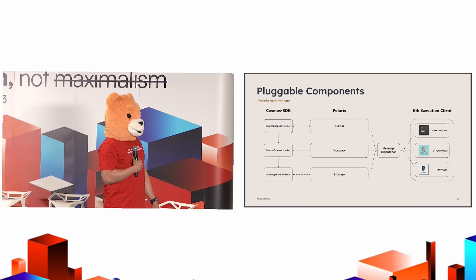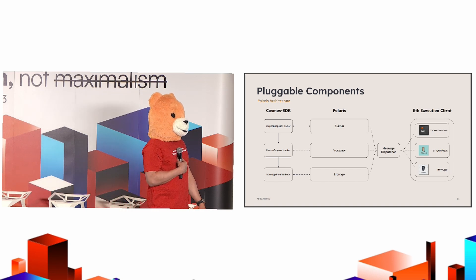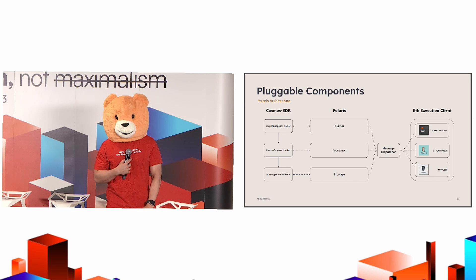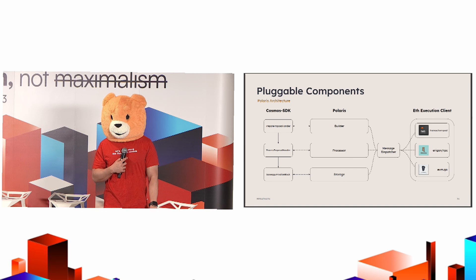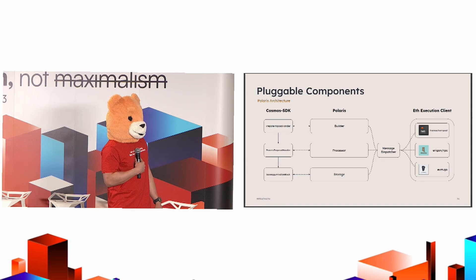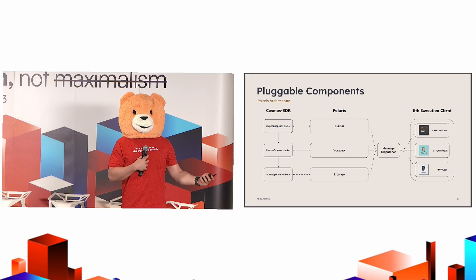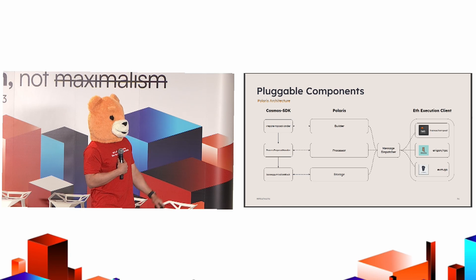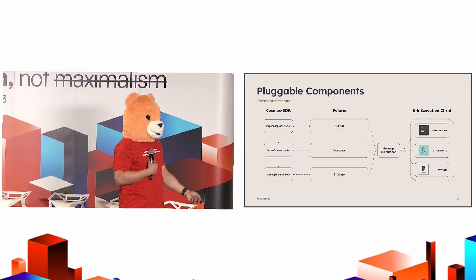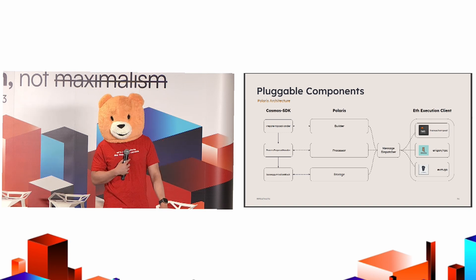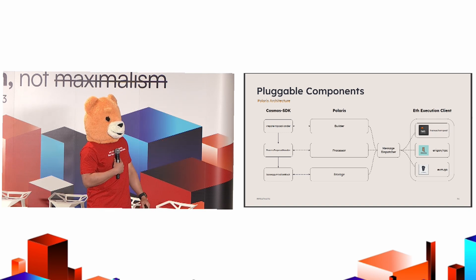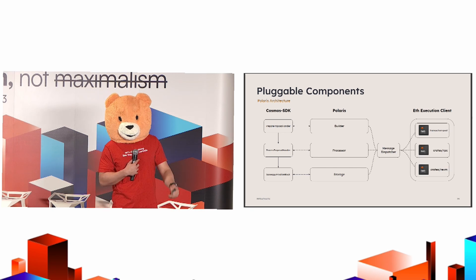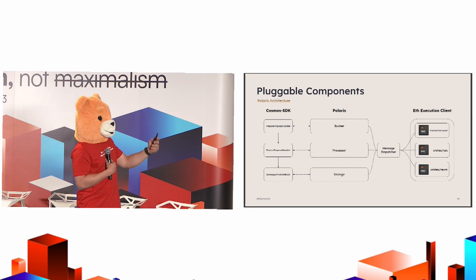This also allows us to make all these components really pluggable. In the traditional approach, if you compiled it all together, you'd have to choose an EVM and be stuck with it. But what we're working on is making it so you can plug in different components from different clients and really increase client diversity. For example, you could take the transaction pool from RETH, the mempool from RETH, use Aragon's RPC — which is notably very well done — and still use the standard GETH EVM. Or, if you really like Rust, you could choose to use all of them.